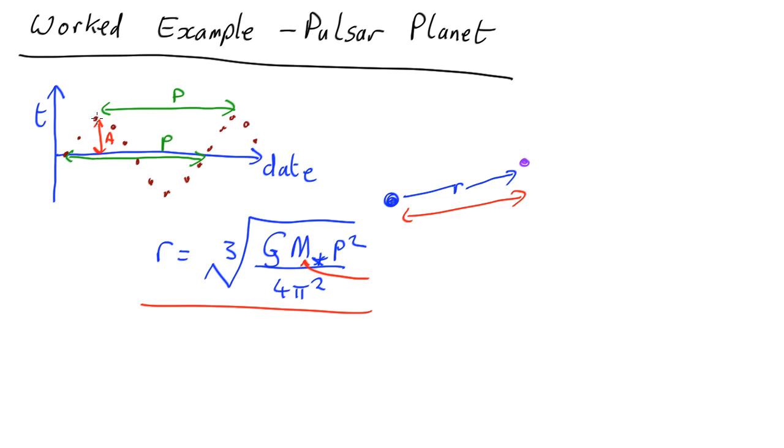Now if the pulses arrive early, that's because the pulsar at this point is a bit closer to us, whereas if they arrive late over here it's because it's further away. So what that means is the distance to us is varying by A times the speed of light.